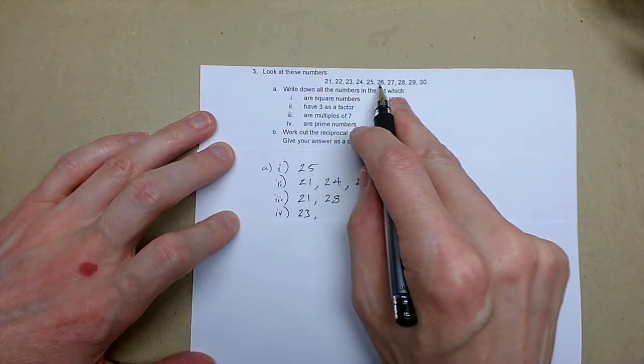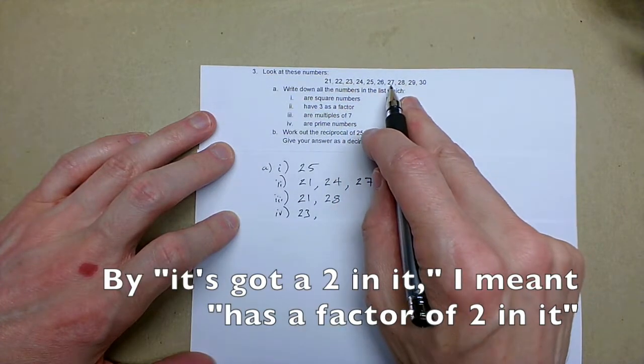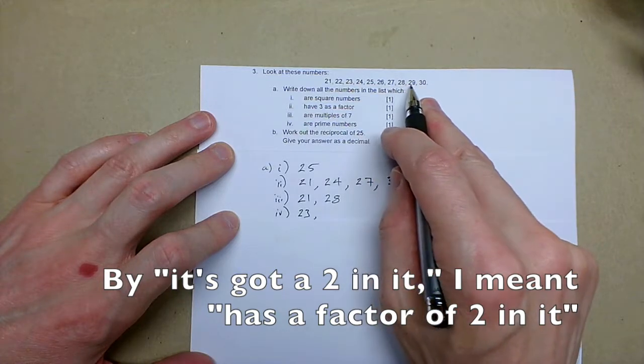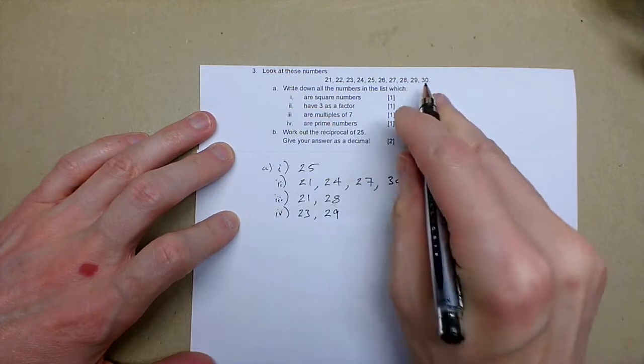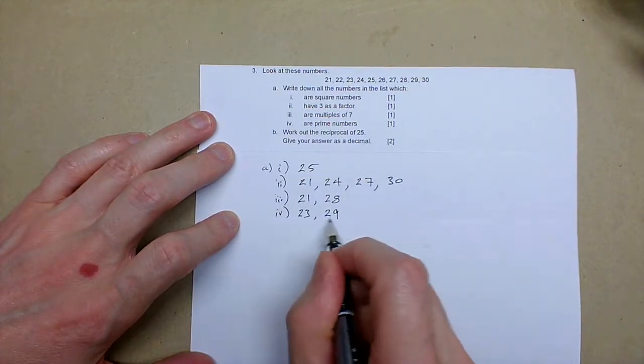26 an even number, so it's got two in it, 27 it's got nine, 28 is even, 29, and 30 is three tens, so just these two numbers here.